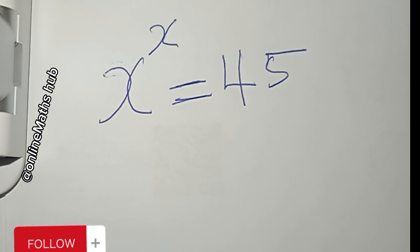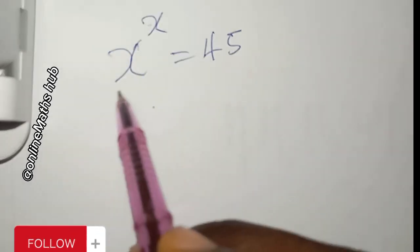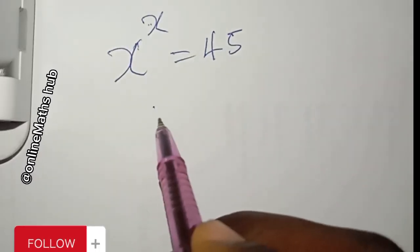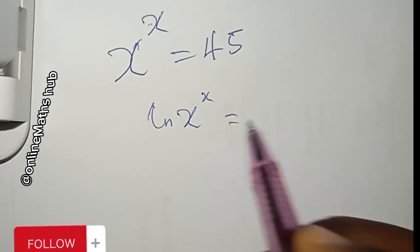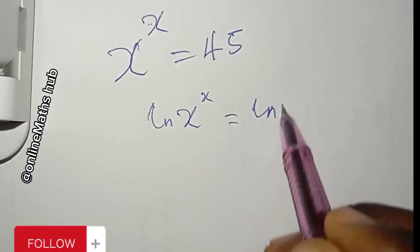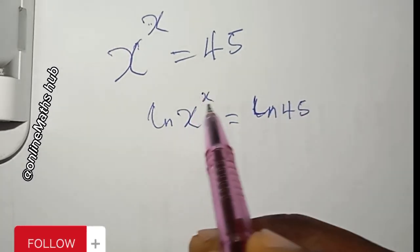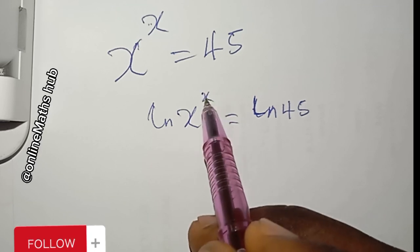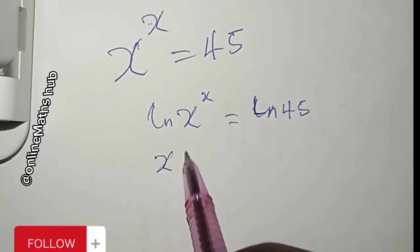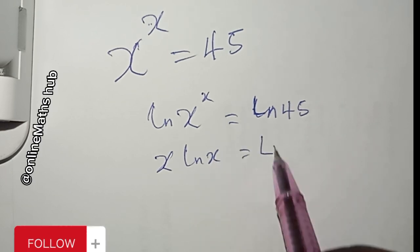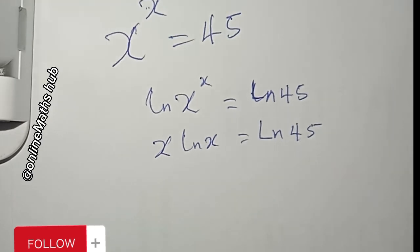To proceed, I'm going to take the natural log of both sides. So I'll have: ln(x^x) = ln(45). Then I'll utilize the logarithm power rule and bring the exponent x down, giving me x·ln(x) = ln(45).